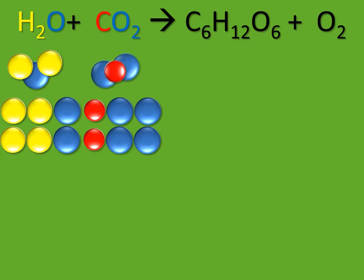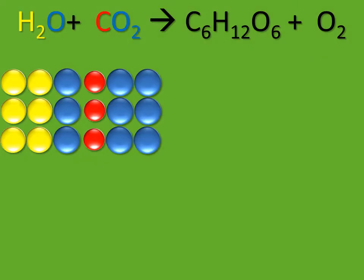More water and more carbon dioxide are added into the leaf of the plant. And again, with the help of the sun, once those molecules are broken apart, the individual atoms are counted. We still don't have enough individual atoms to make a glucose molecule.